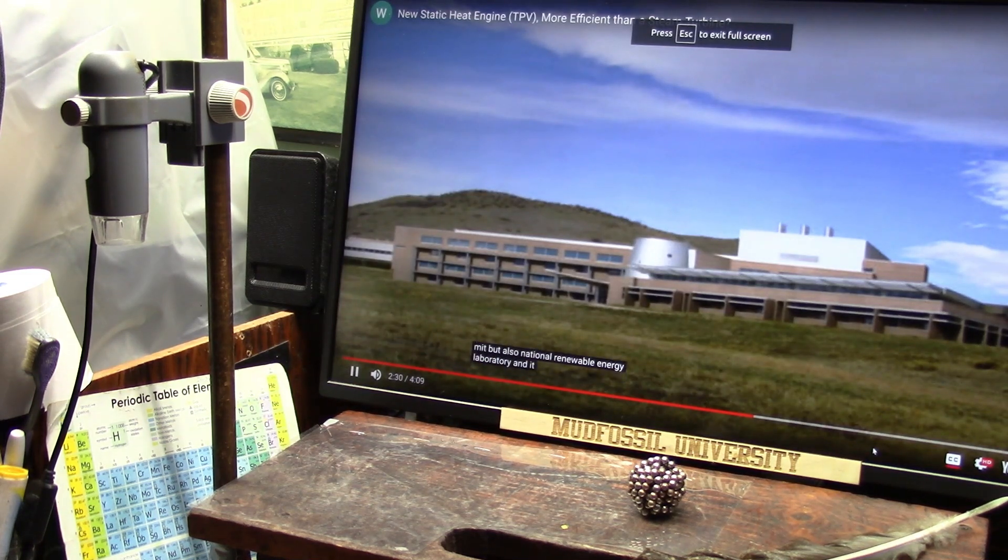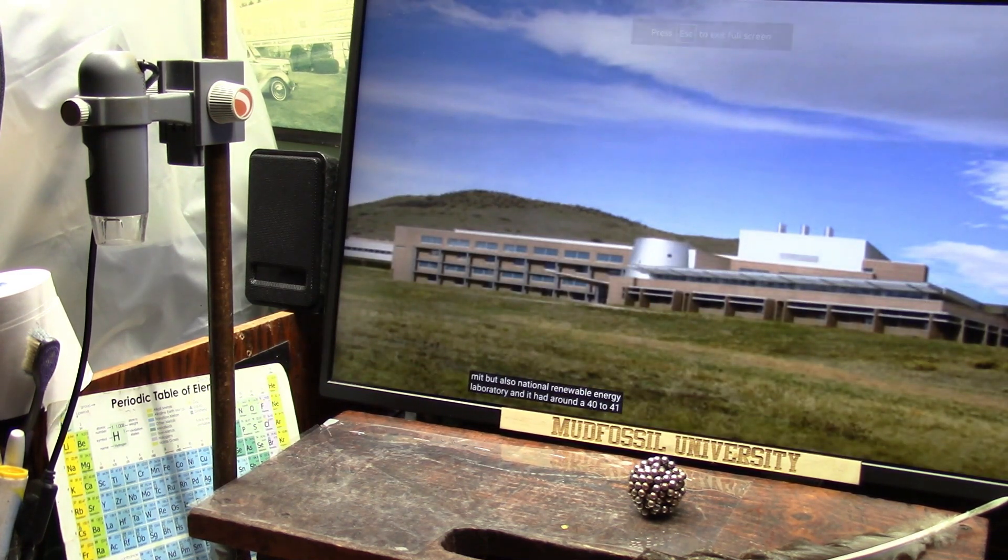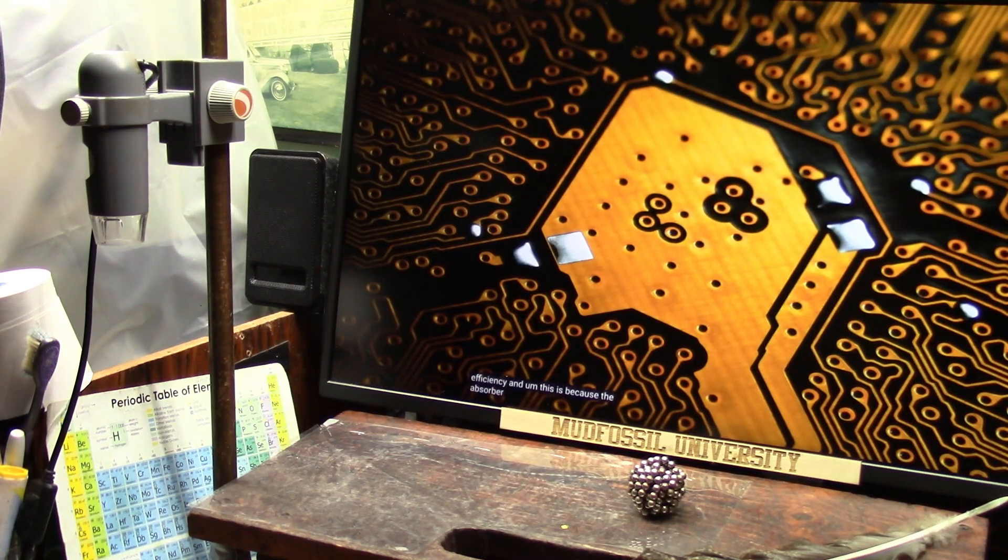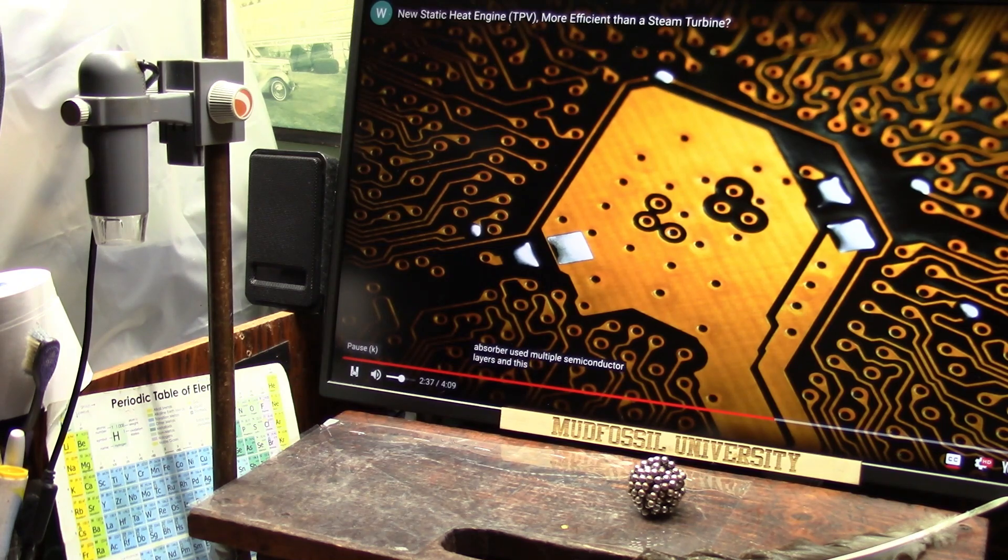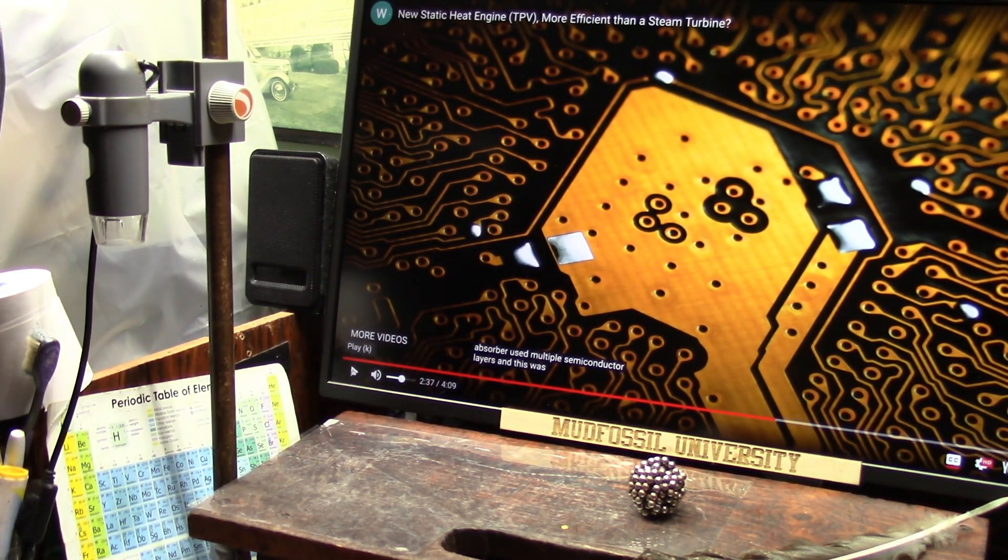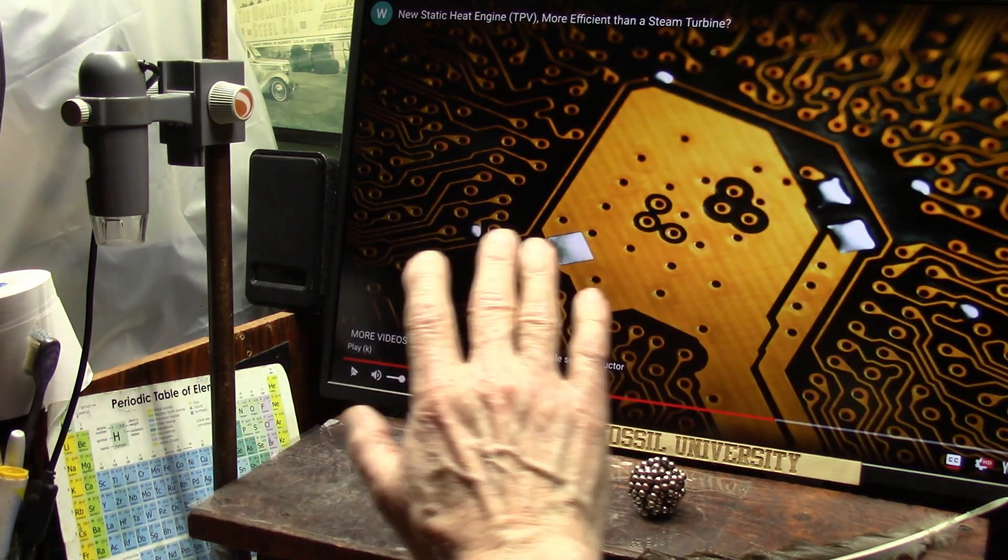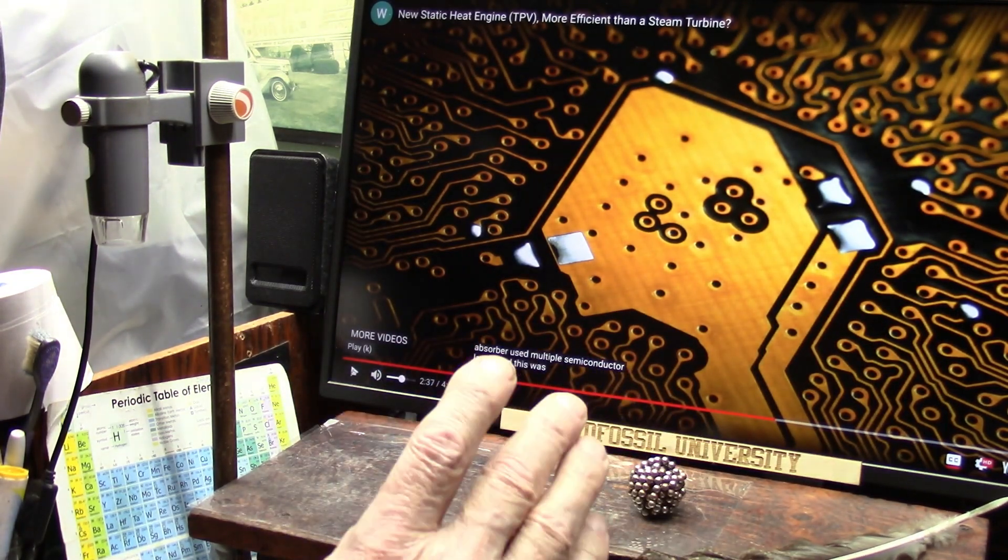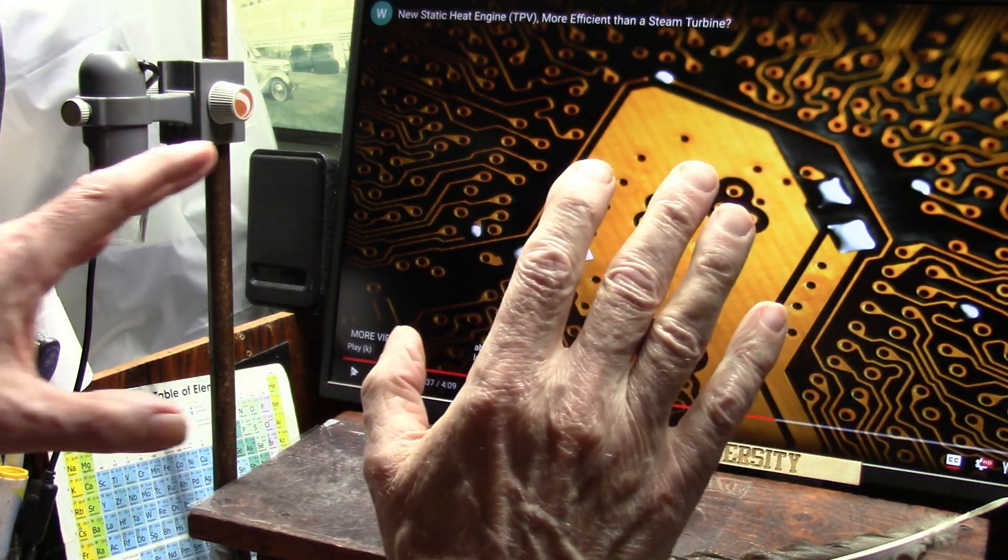It's by MIT but also National Renewable Energy Laboratory had around 40 to 41 percent efficiency. This is because the absorber used multiple semiconductor layers, and that's exactly what I've been talking about—these multi-semiconductor layers.